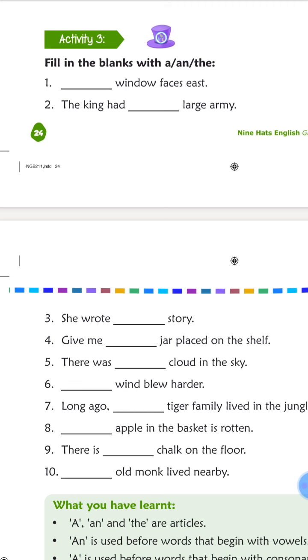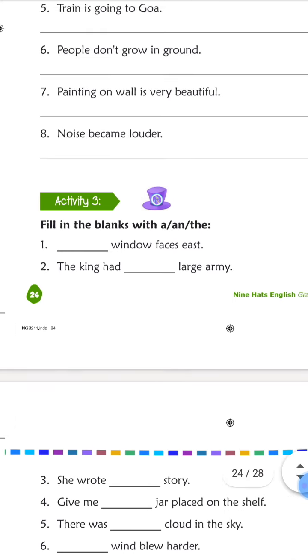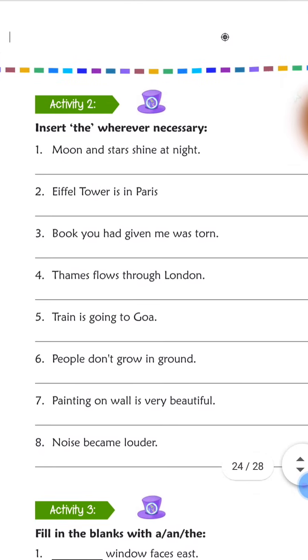When we start a word with a vowel, we use 'an'. The first letter will be A, E, I, O, U. And if there is a consonant word, we need to use 'a'.